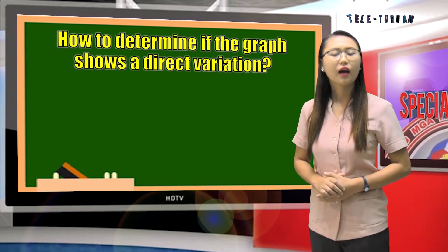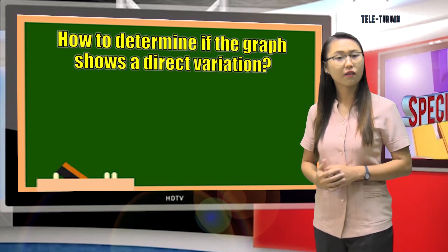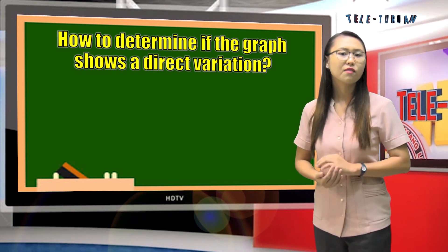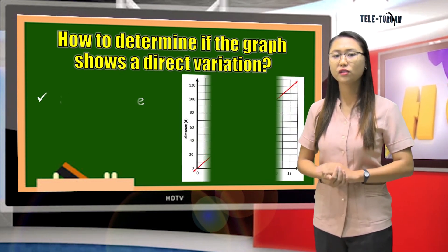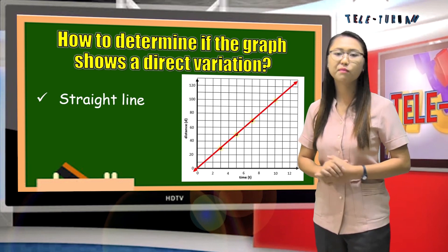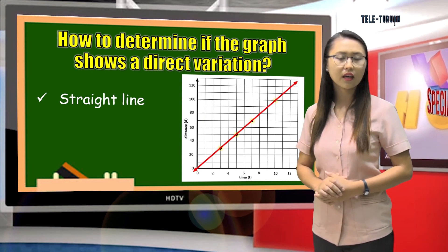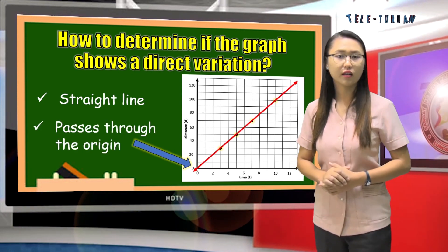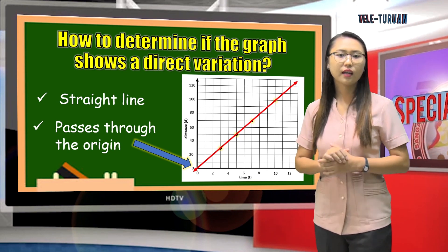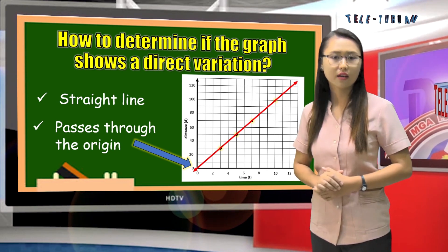Next, how to determine if the graph shows a direct variation. For us to determine if the graph shows direct variation, the graph must be a straight line and it passes through the origin. This is an example of a graph that shows direct variation.